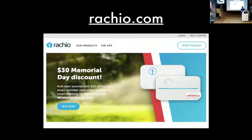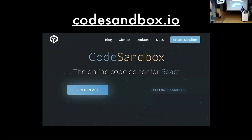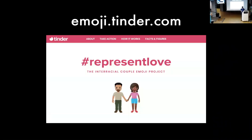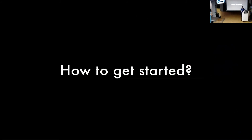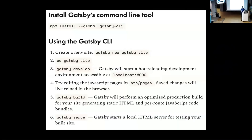For example sites, there's an e-commerce site built on Gatsby and Shopify — if you click around it, it's super fast and feels very interactive. There's also codesandbox.io and emoji tinder. For getting started: go to gatsbyjs.org, there's a big 'get started' button, a CLI, and default starters. You can just run Gatsby new and get a main website, and you're in Gatsby.